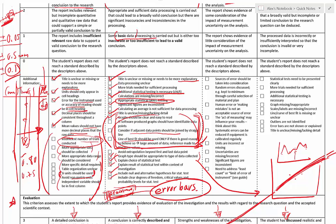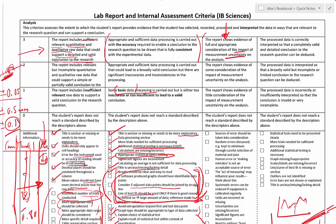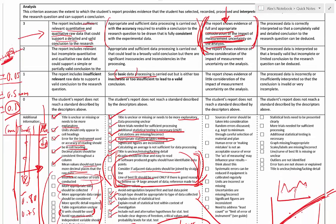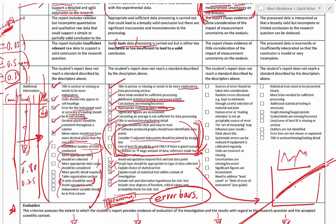Consider the impact of measurement uncertainty on the analysis — this can be interpreted multiple ways. Depending on whether it's a Biology, Chemistry, or Physics IA, the treatment will differ. You can also discuss different types of errors. Systematic errors are an important category, and if you're not sure about the difference between random and systematic errors, there's a video available with examples.